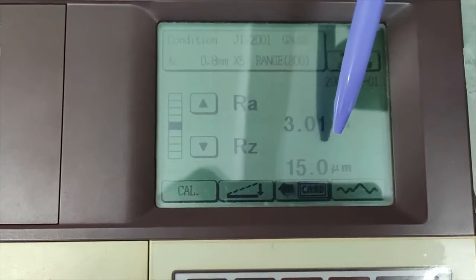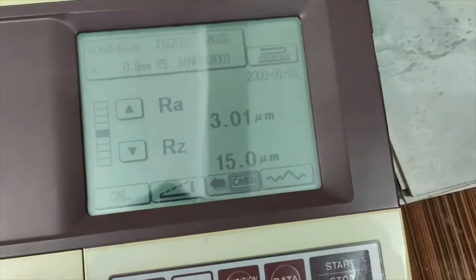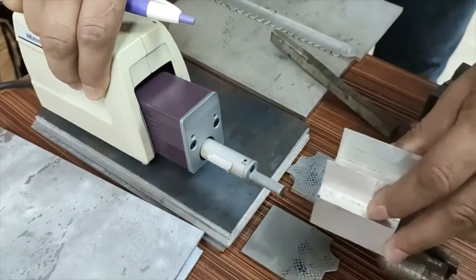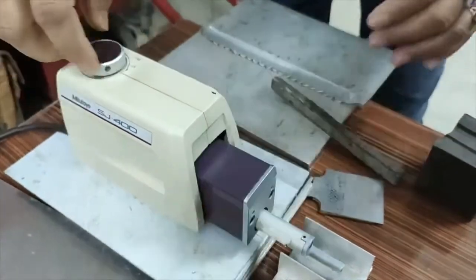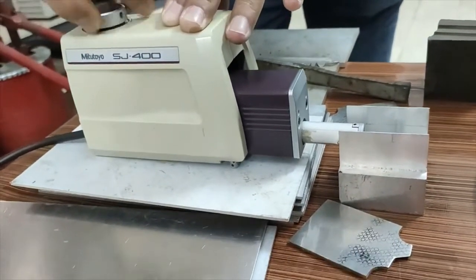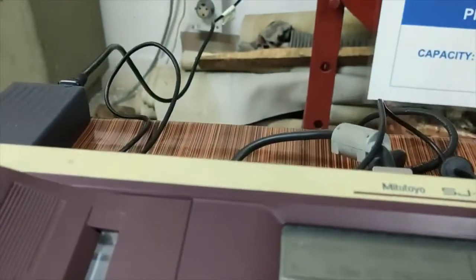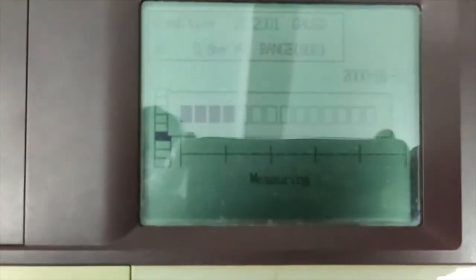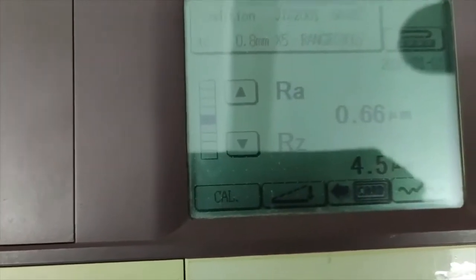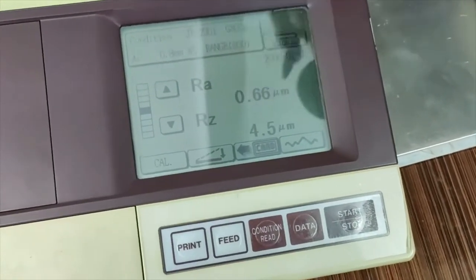This is our result. Ra is roughness average, 3.01 micrometer, and total roughness Rz is 15.0 micrometer. The Ra value formula I will show you later. Like this way you can measure the milling surface of aluminum by adjusting each side. Like this you just adjust it whether it is touching or not. You can see it is touching. Press start button again. This surface Ra value is 0.66 micrometer and Rz value is 4.5 micrometer.